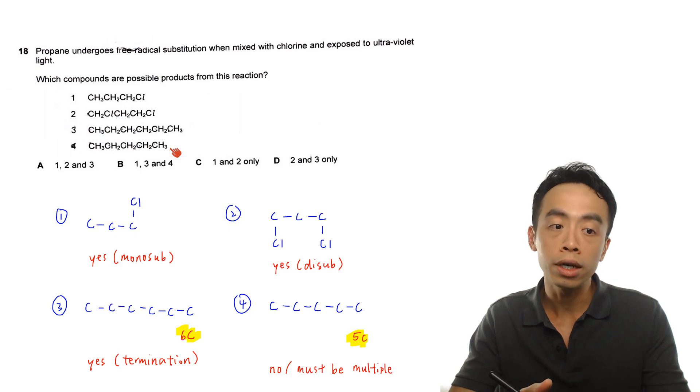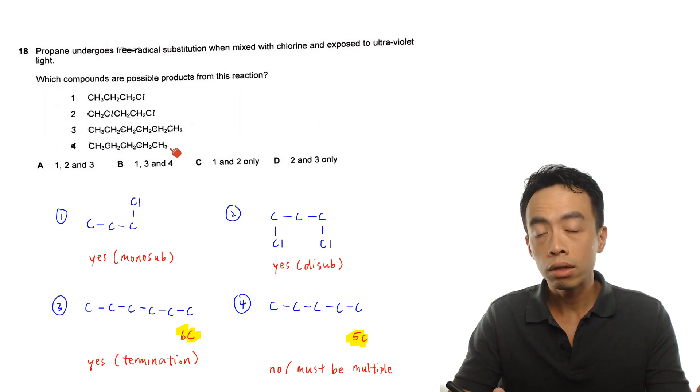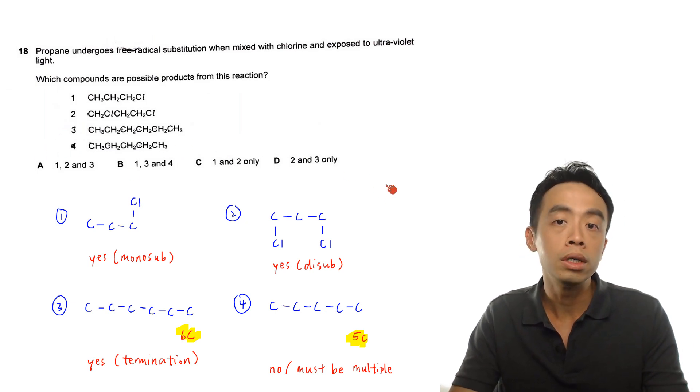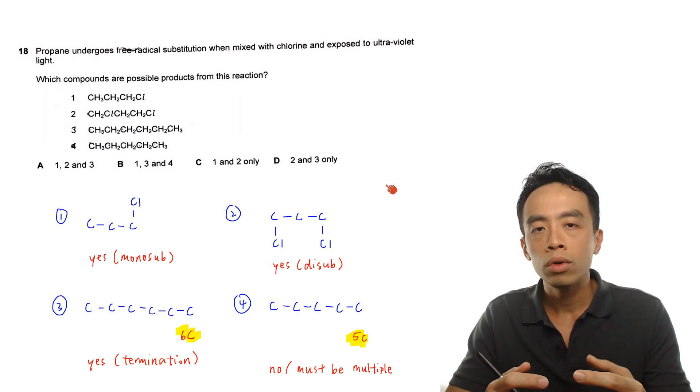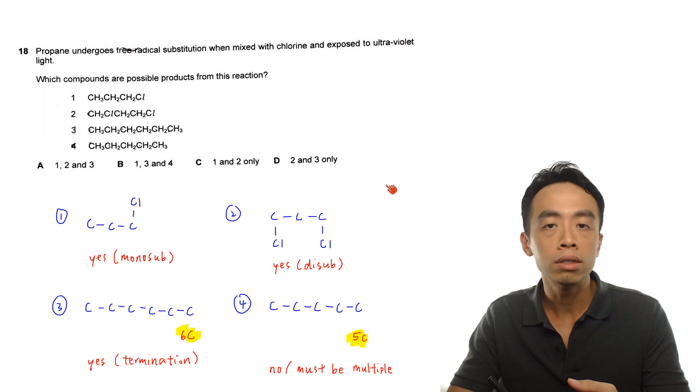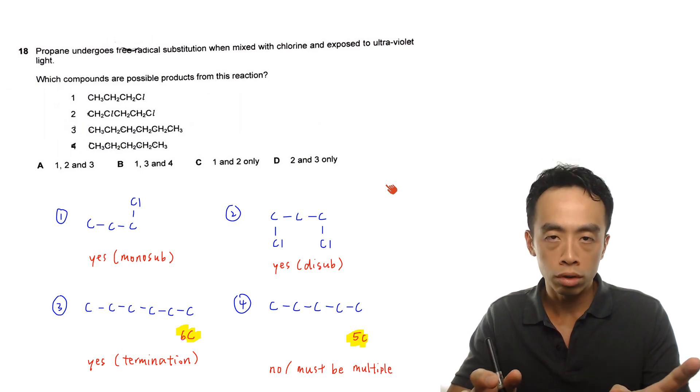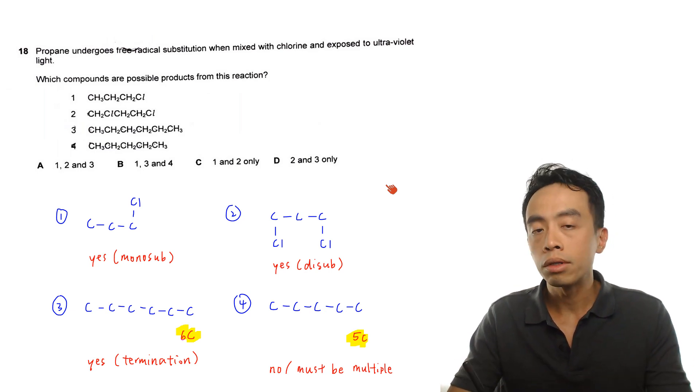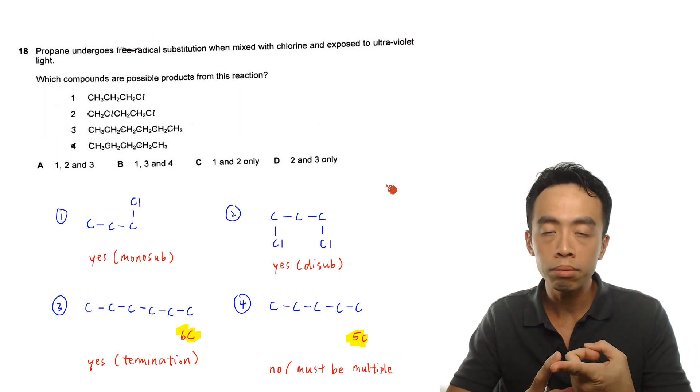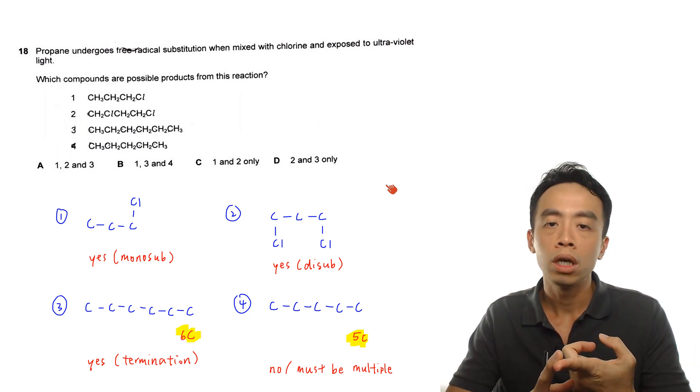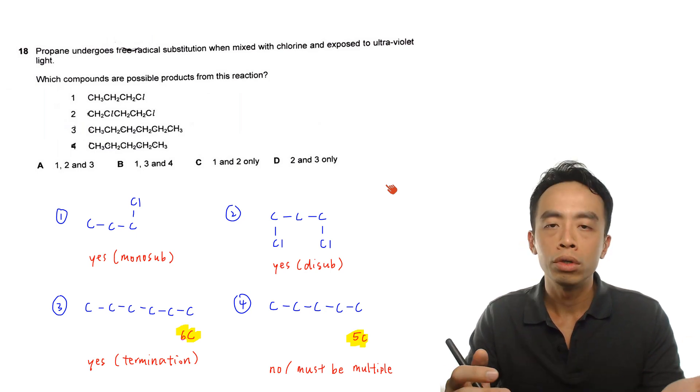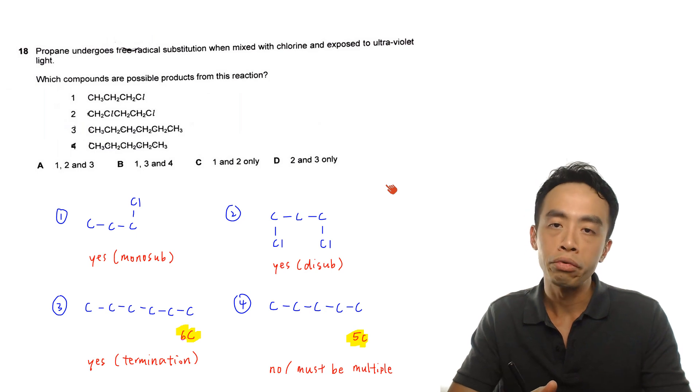So of course we want to decide out of these four compounds which one are possible products for free radical substitution. Now we have to be familiar with the mechanism involving free radical substitution. In general, very briefly, free radical substitution is broken down into three steps. Initiation step, where the halogen-halogen bond is broken due to the presence of UV light, so it generates your halogen radicals to kickstart the reaction.